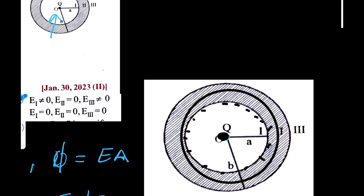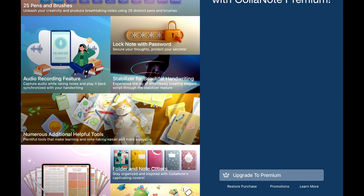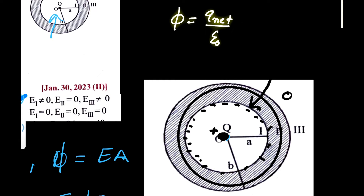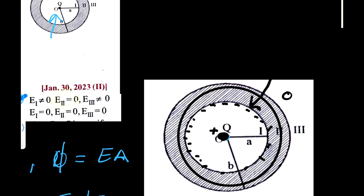Within this Gaussian surface, the net charge enclosed is zero — because the positive charge q and the equal negative charge induced on the inner surface cancel out. Since the net enclosed charge is zero, flux is zero. Since flux equals E times A and area is not zero, the electric field inside the conductor is zero.